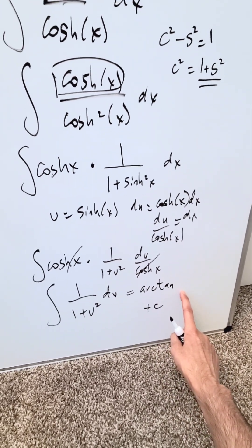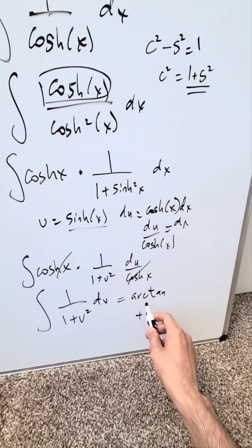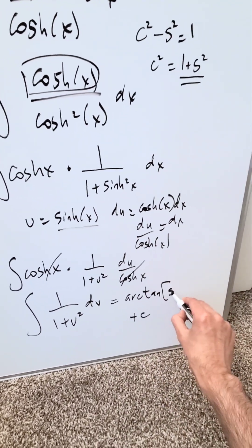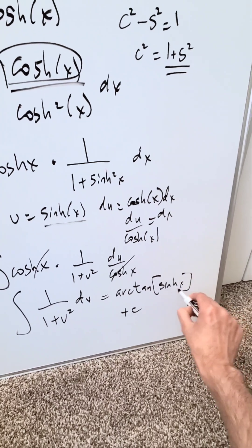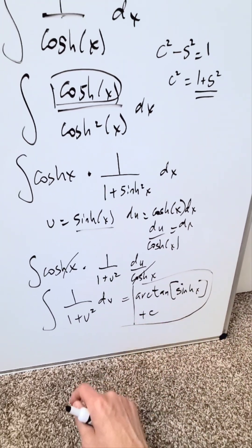I'm not writing u because I have a substitution for u. What is u equal to? It's this. My end result here is arctan hyperbolic sine x plus C, and this right here is my antiderivative of hyperbolic secant.